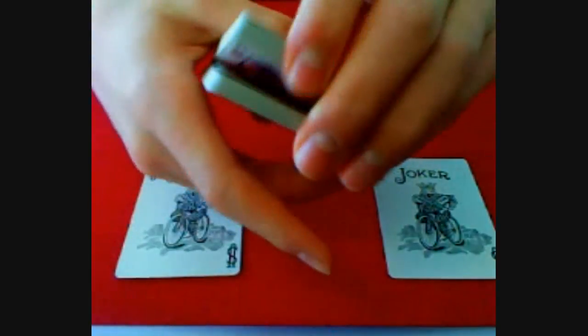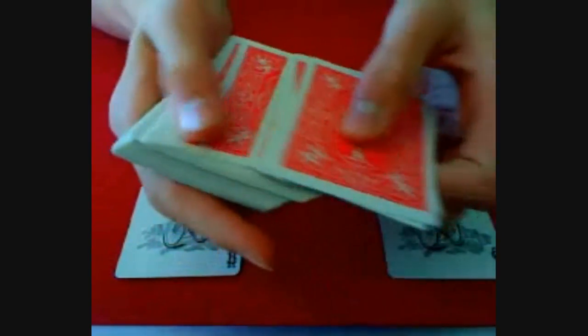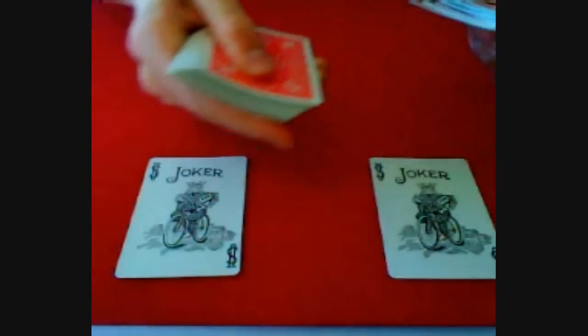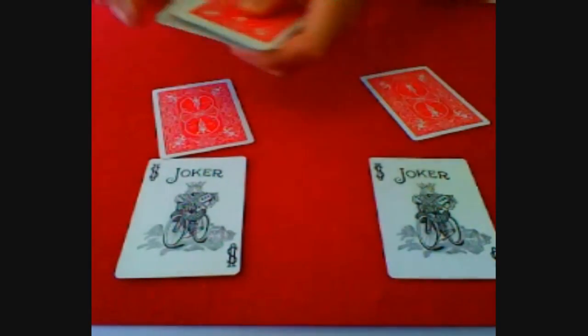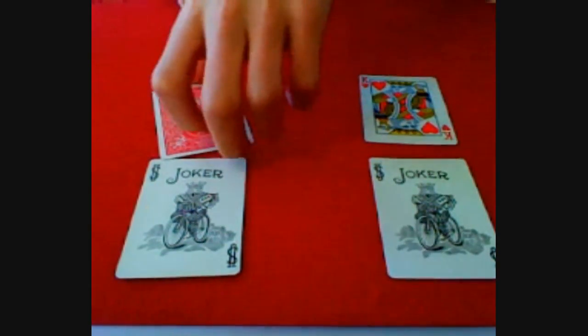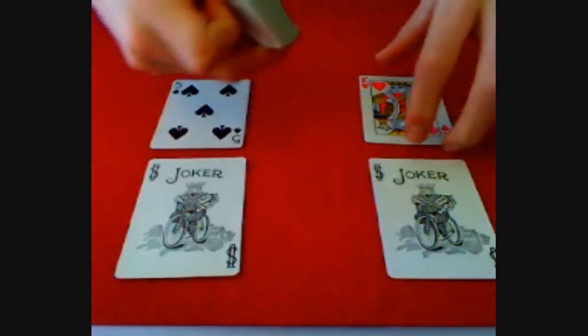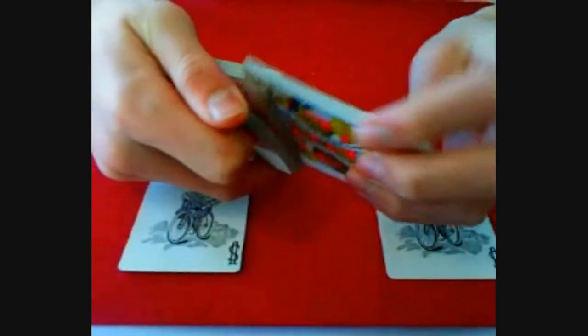So if you would, just reach into the pack and take out any card you'd like. Let's say, I don't know, you like this card and this card. Those look fine. Let's take a peek at these. We have the King of Hearts and the Five of Spades. We'll bury both of those down inside the pack.